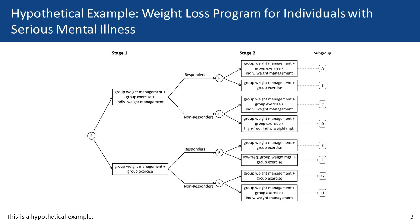Non-responders to this initial three-component intervention are also re-randomized between the initial intervention — group weight management and group exercise, that's subgroup C — or group weight management, group exercise, and a higher frequency of the individual weight management component, that's subgroup D. In the bottom half of the SMART, responders to the group-only intervention are randomized between the group-only intervention (subgroup E) or a lower frequency group weight management along with group exercise (subgroup F). Non-responders to the group-only intervention are re-randomized between group weight management and group exercise (subgroup G) and group weight management, group exercise, and individual weight management in subgroup H.